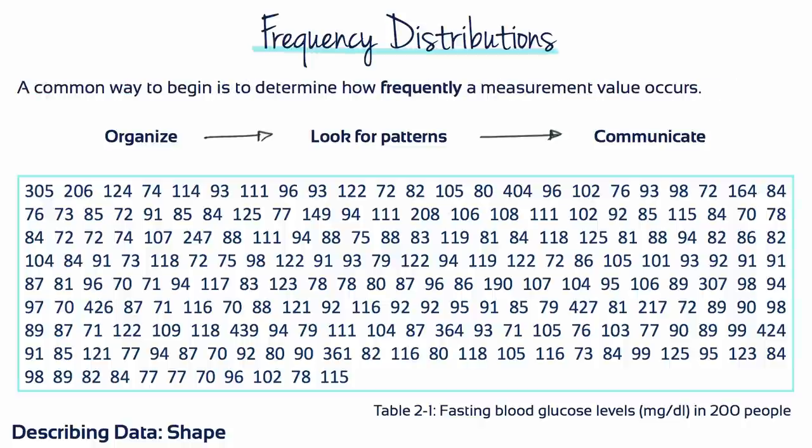One of the most common procedures for organizing a set of data is to place the scores in a frequency distribution.